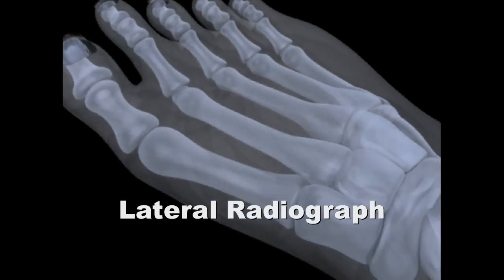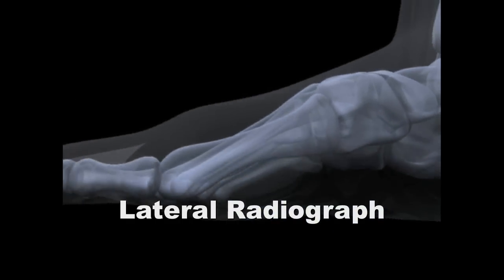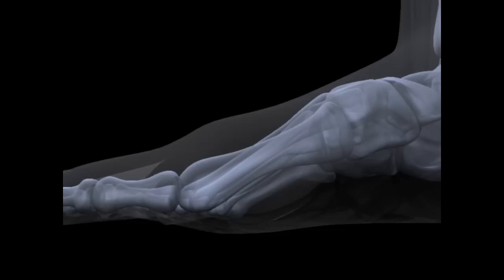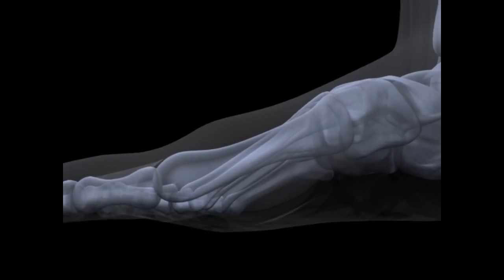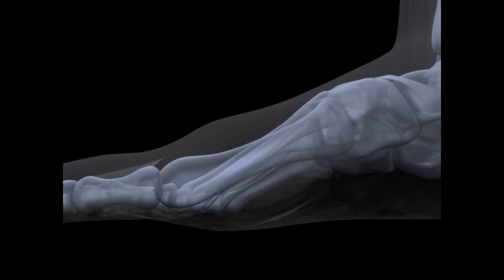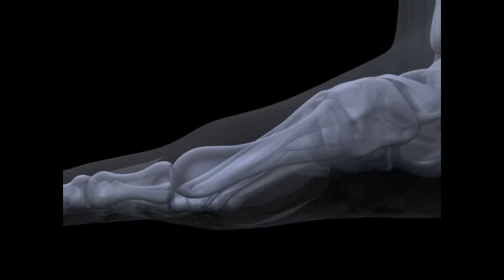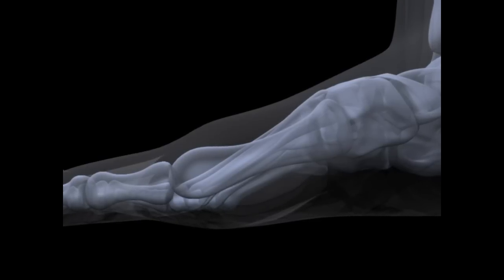When viewed on a lateral radiograph, hallux limitus may be noted in correlation with an elevated first metatarsal, where either the entire metatarsal is abnormally elevated above the lesser metatarsals, or the head is in a relatively dorsiflexed position over the shaft.